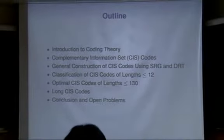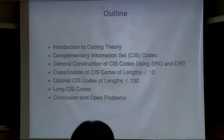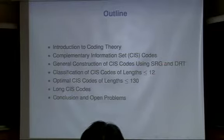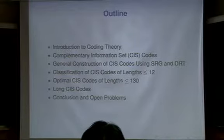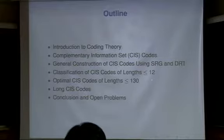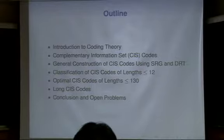Since most of you are not familiar with coding theory, let me give you a brief introduction to coding theory, and then move to our new class of linear codes called Complementary Information Set Codes. Then how do you construct them using some graphs called the strongly regular graph and the doubly regular tournament. And then we classify all such CIS codes of lengths up to 12. It is very hard to classify CIS codes of lengths greater than 12, so we just stop there.